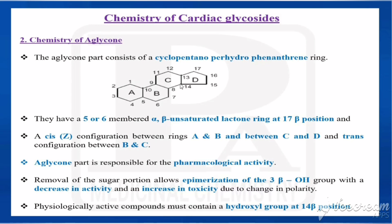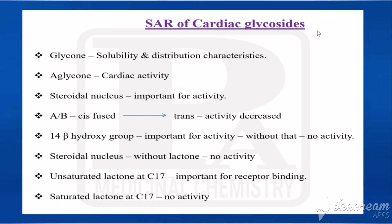Examples of cardiac glycosides with a hydroxy group at the 14th position are digoxin and digitoxin. Cardiac glycosides have two parts: glycone (sugars such as digitoxose and glucose) and aglycone (steroid nucleus — cyclopentano-perhydrophenanthrene — with cardenolide or bufodienolide at the 17th position). The glycone is responsible for solubility and distribution characteristics, while the aglycone is important for cardiac activity.